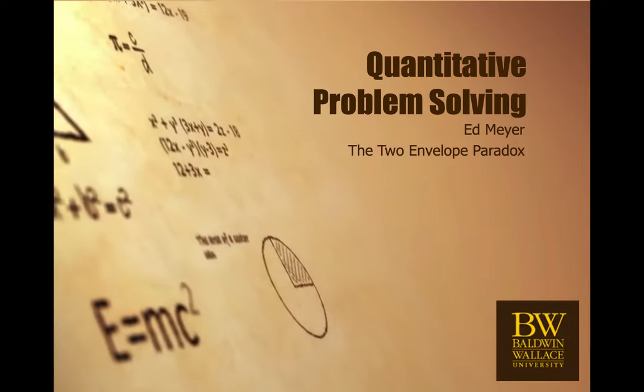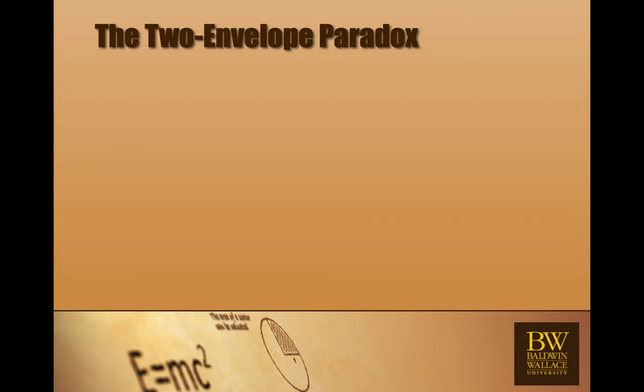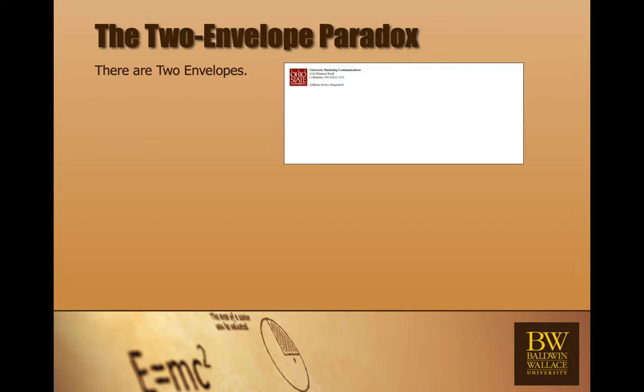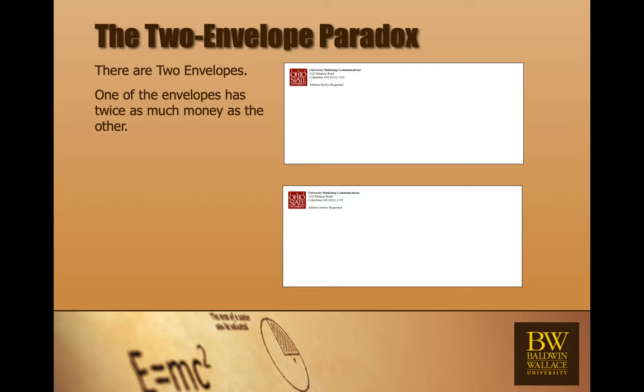This is a presentation on the two envelope paradox by me, Ed Meyer. The two envelope paradox consists of two envelopes. One of the envelopes has twice as much money as the other. That's a given.